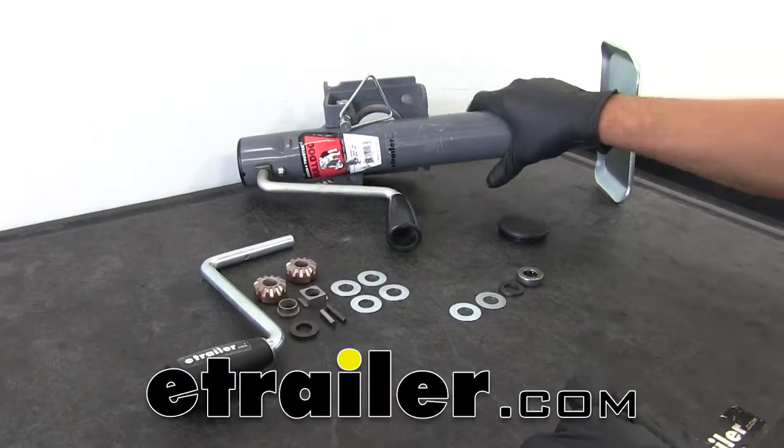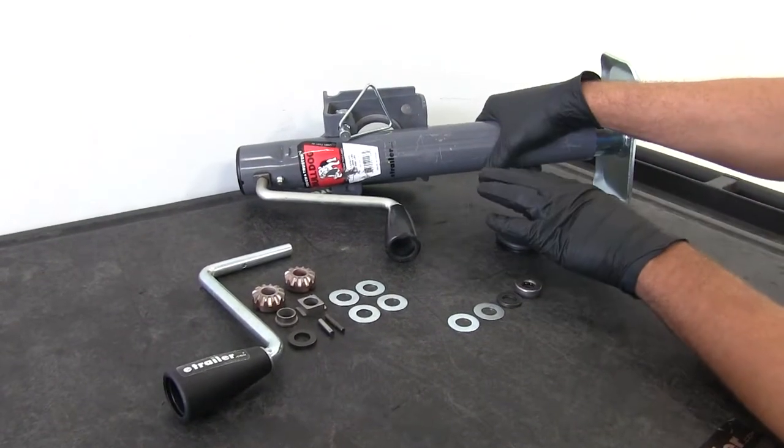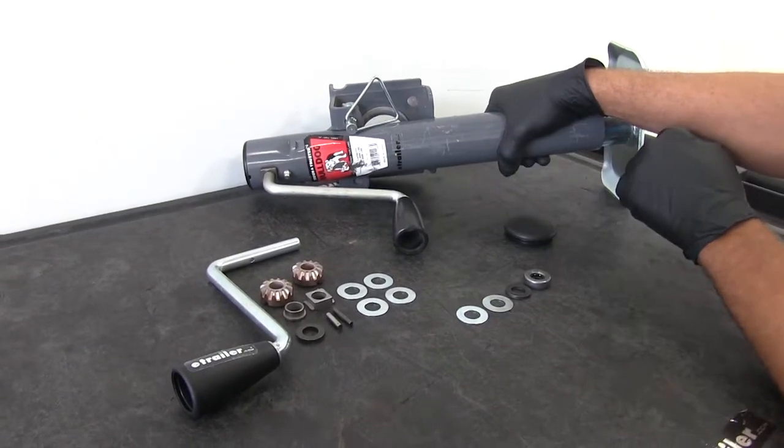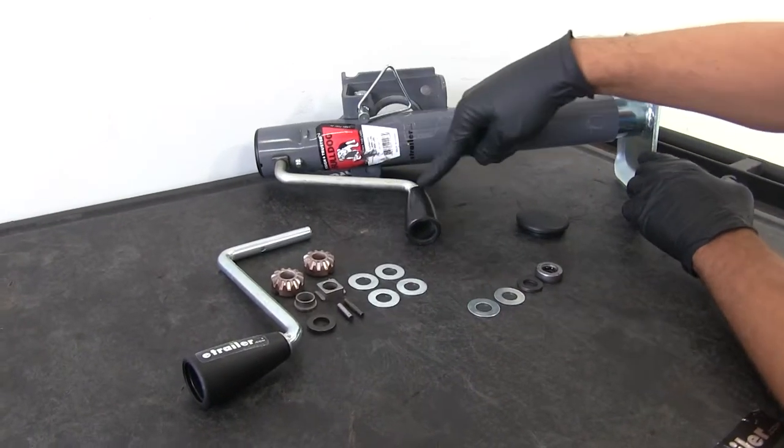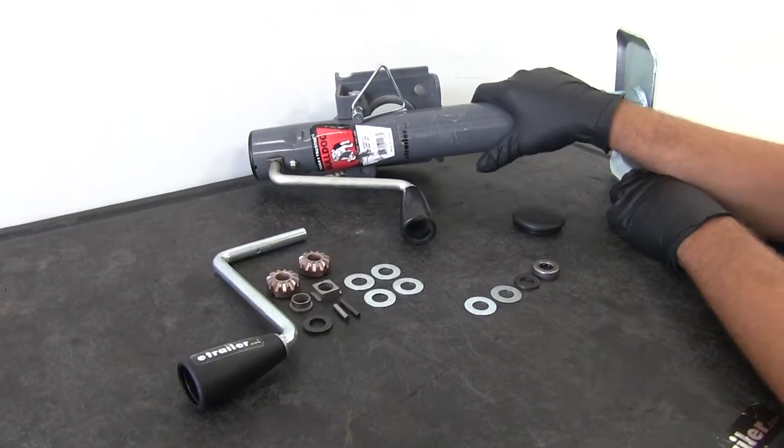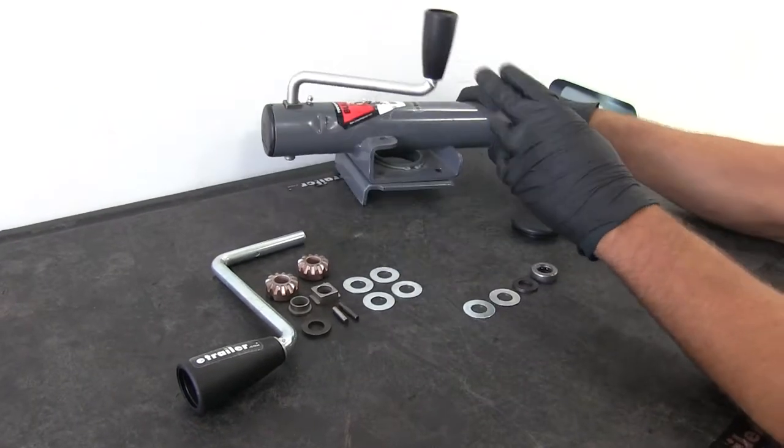Today we're going to be taking a look at the rebuild process for the Bulldog 2,000 pound lift capacity round trailer jacks. These are the 150 series jacks, side wind style. It's a pretty simple process for rebuilding the jack.